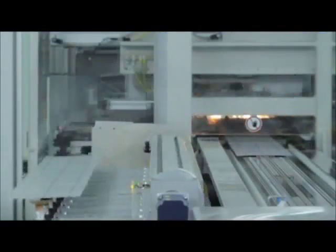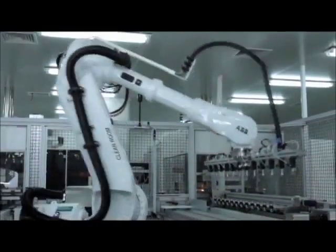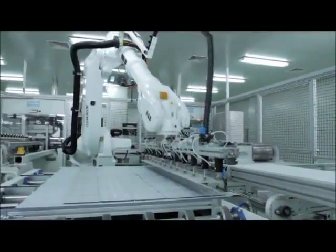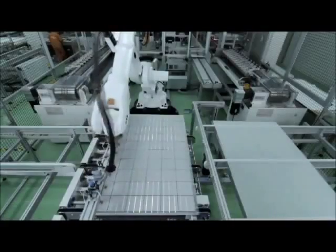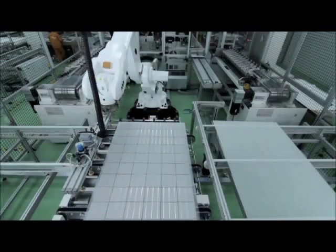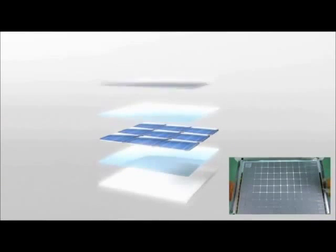Once the soldering has been completed, the line of cells is picked up and laid out by a state-of-the-art six-axis robot. Then, with an electronic measuring device, the cells are placed with exact precision on the glass to be assembled in a sandwich structure.